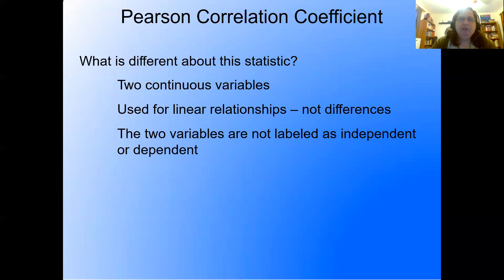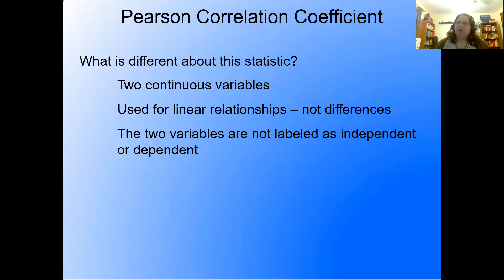That's the only one we'll cover in this class. We're going to have two continuous variables used for linear relationships, not differences. And this is key: the two variables are not going to be labeled as independent or dependent. They're just two variables — we're not calling one independent and one dependent. We're just having two variables and we're interested in their relationship.